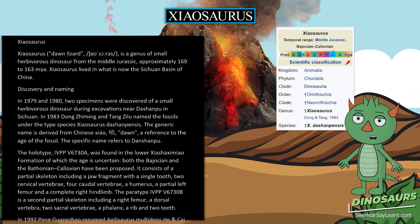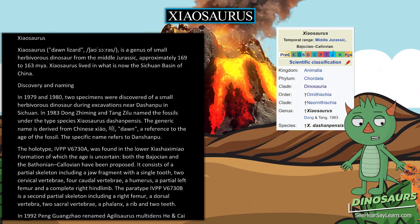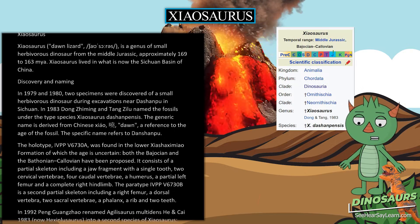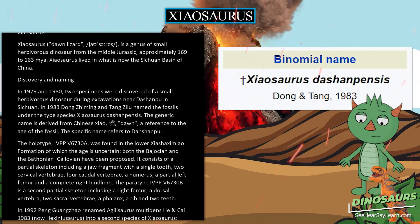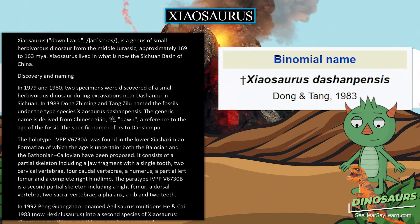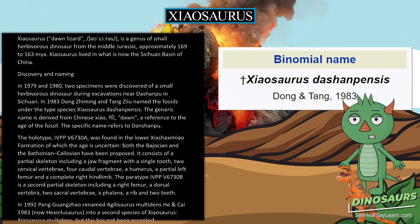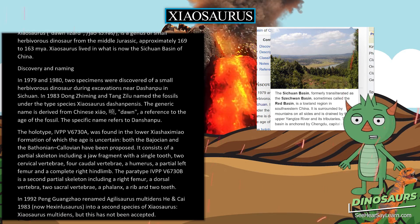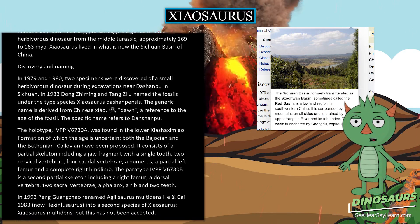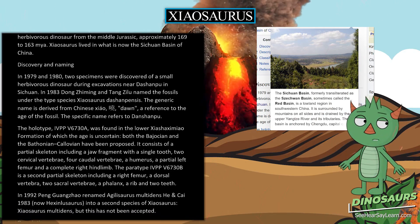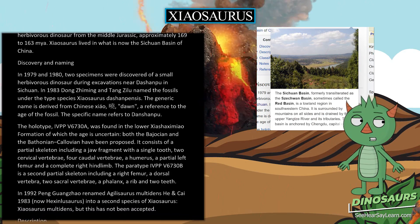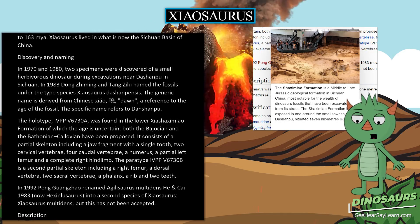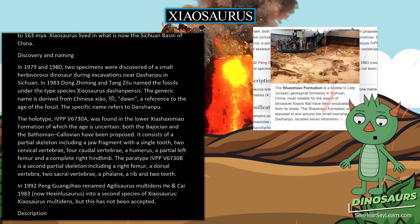The holotype, IVPPV6730A, was found in the lower Shaximiao Formation, of which the age is uncertain. Both the Bajocian and the Bathonian have been proposed. It consists of a partial skeleton including a jaw fragment with a single tooth, two cervical vertebrae, four caudal vertebrae, a humerus, a partial left femur, and a complete right hand bone.